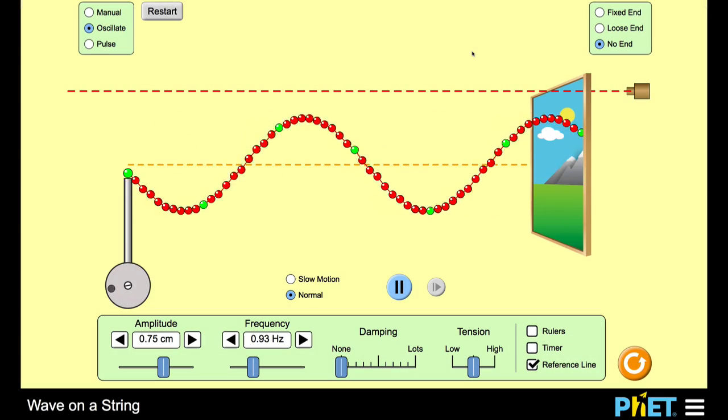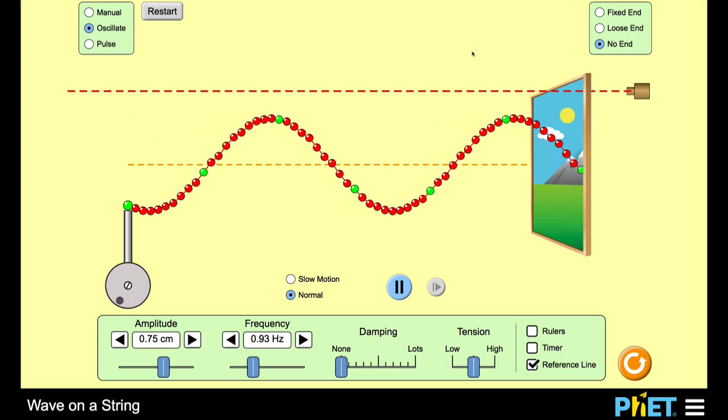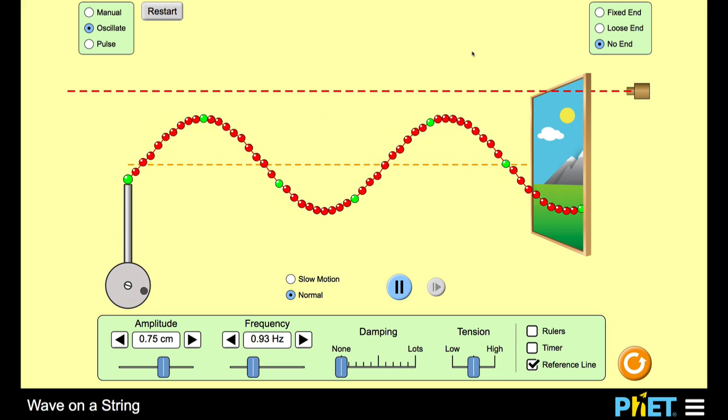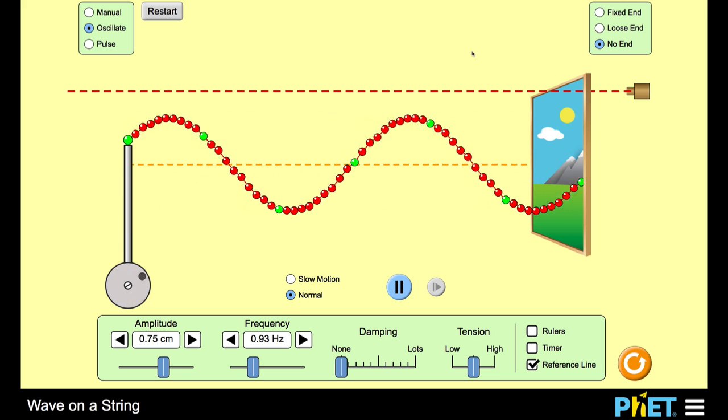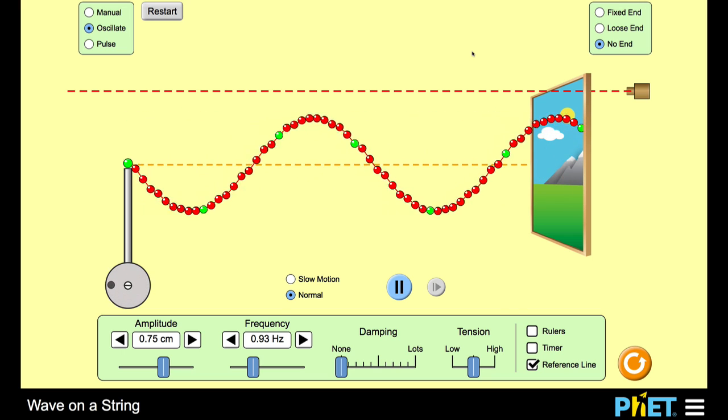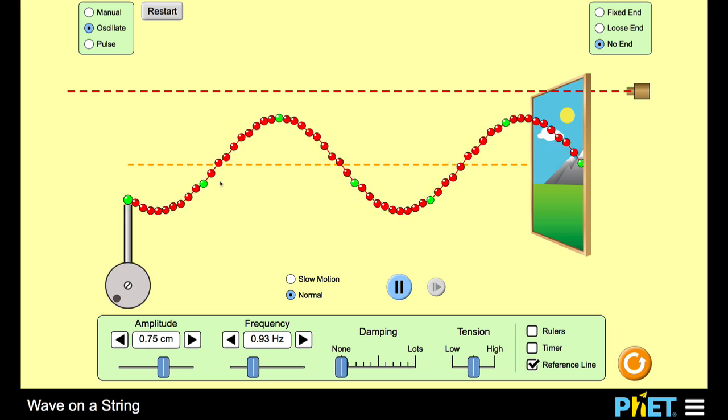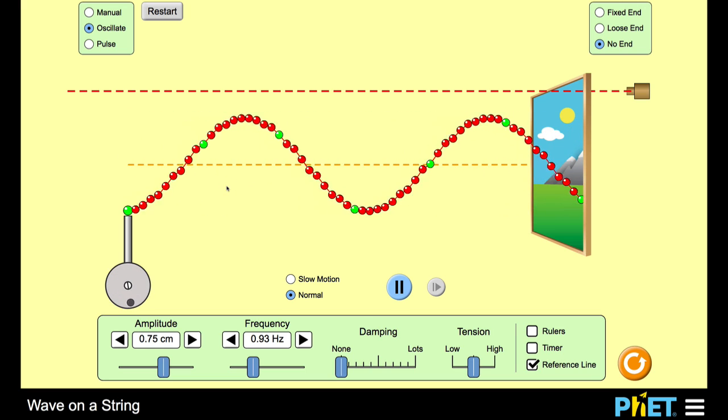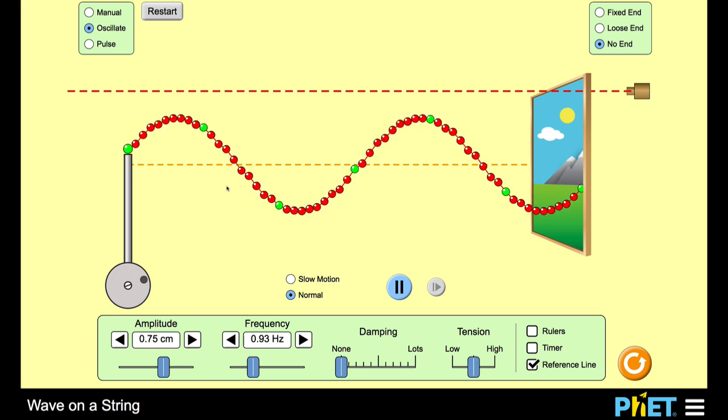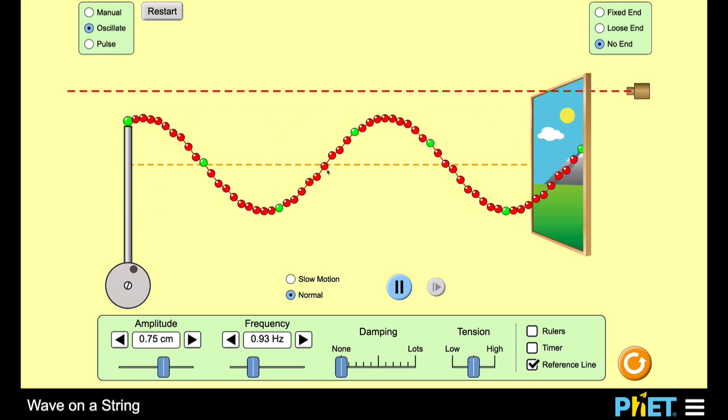So here we've got a simulation of a wave traveling along a piece of string. This is very similar to the pulse, the transverse pulse, that we sent along the slinky coil before, except that it's more idealized because it's a simulation. If you look at the little green points, you can see that the particles making up the medium are moving upwards and downwards while the pulse is moving along to the right.